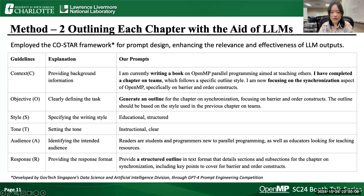Then let's talk about using LLMs to generate outlines for a specific chapter. To improve the quality of the content generated by large language models, we employed the COSTAR framework when designing the prompts. C stands for context — we provide the LLM with background information. For example: 'I'm currently writing a book on OpenMP parallel programming aimed at teaching others. I have completed a chapter on Teams and now I'm focusing on synchronization, specifically barrier and ordered constructs.' This context helped the LLM understand the broader picture of what we were trying to achieve.